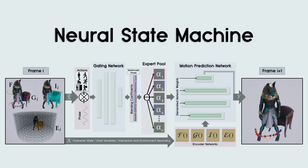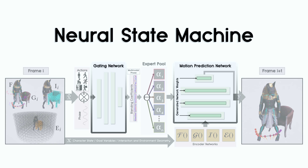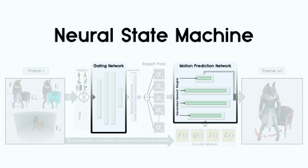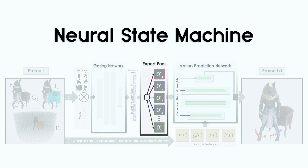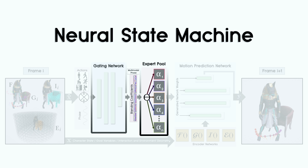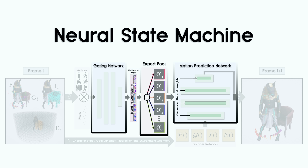The Neural State Machine consists of two main components: the gating network and the motion prediction network. Our model learns a set of expert weights and how to dynamically blend them in the gating network, which then composes the motion prediction network that animates the character.